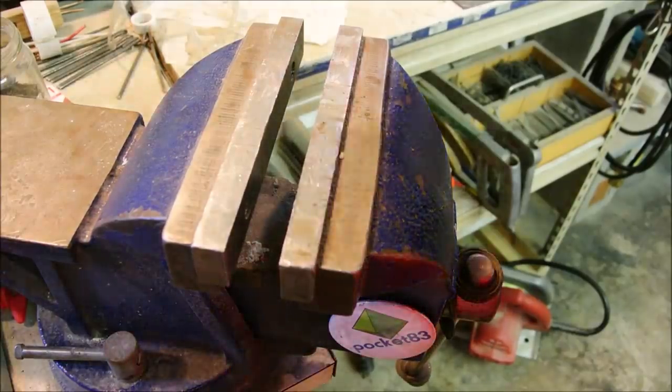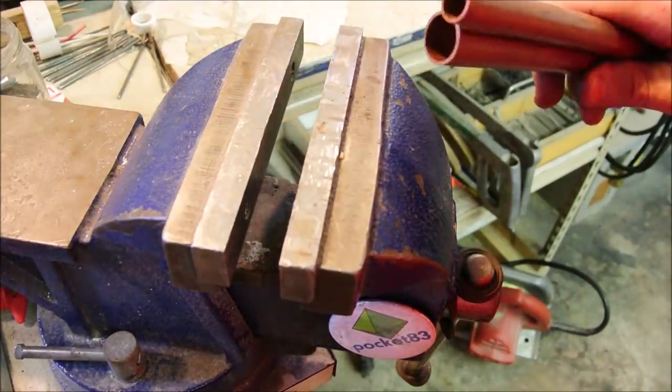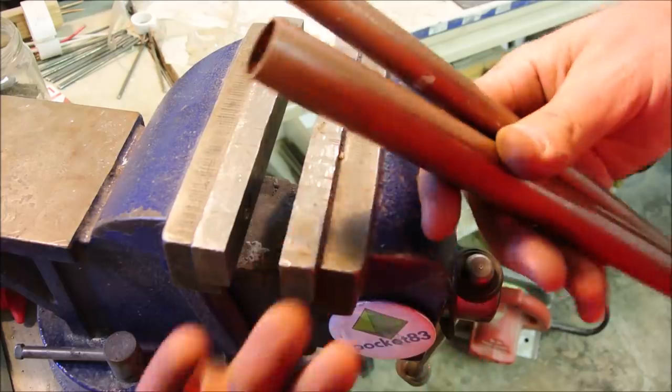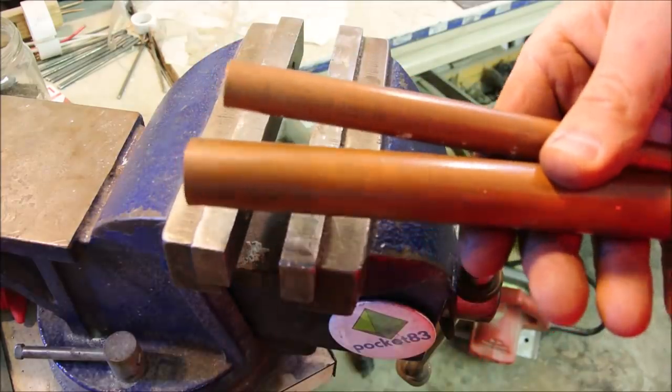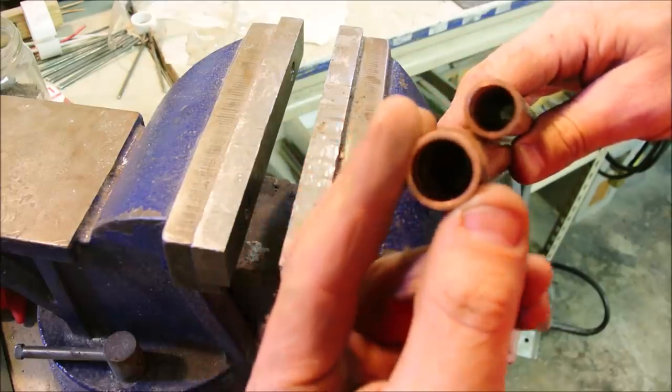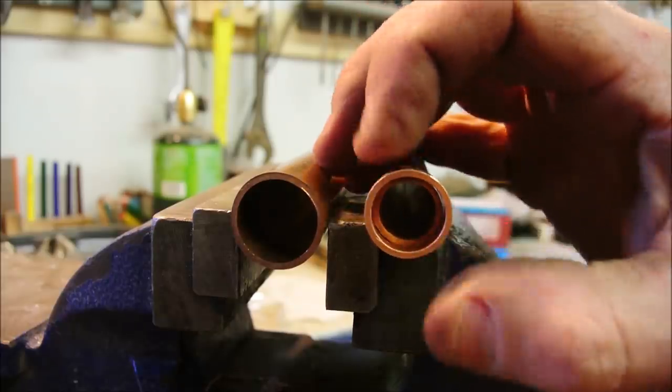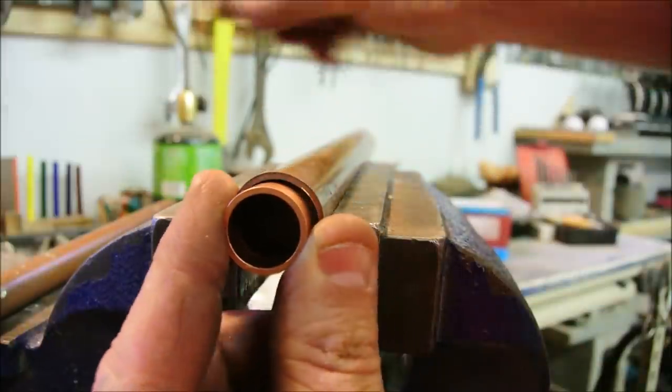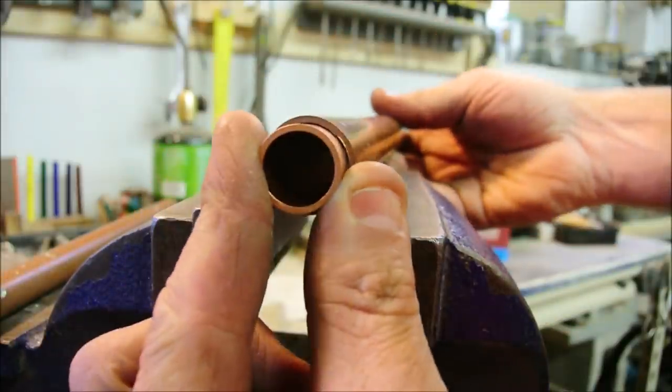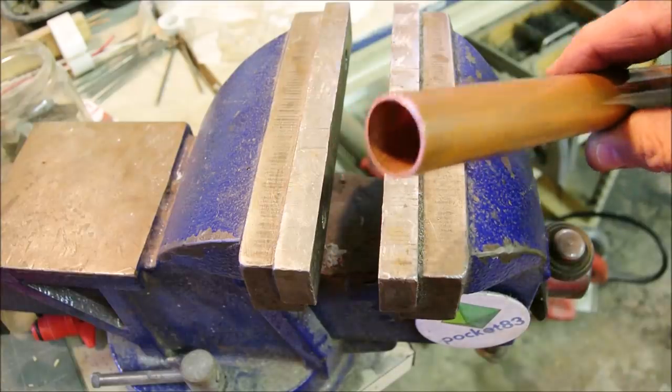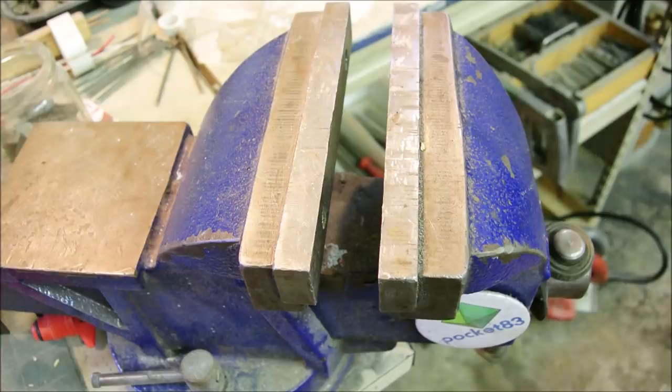But if you were wondering, no, you can't just use regular copper plumbing to make your own PEX fasteners because here it is in comparison to half inch, and this is three quarters. The three-quarter pipe is pretty close so you might be able to get it to work, but I wouldn't recommend it.